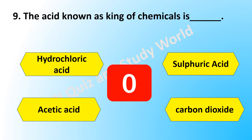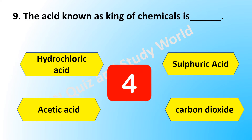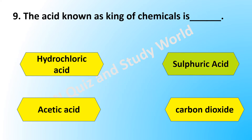Which acid is known as the king of chemicals? Is it hydrochloric acid, sulfuric acid, acetic acid, or carbon dioxide? The answer is sulfuric acid.